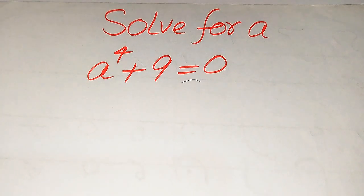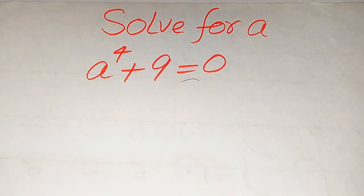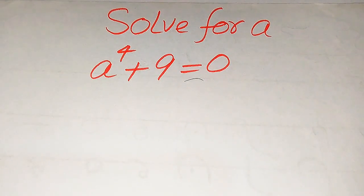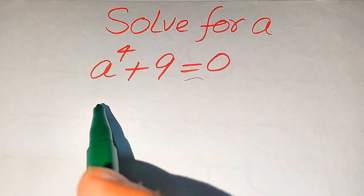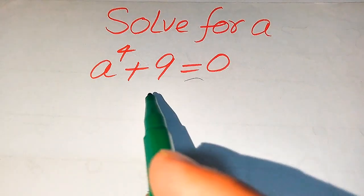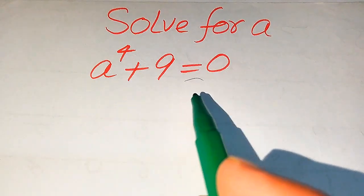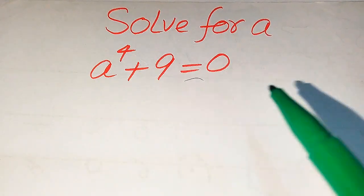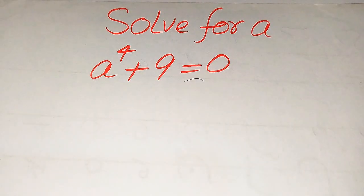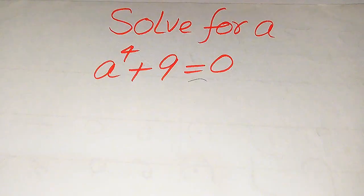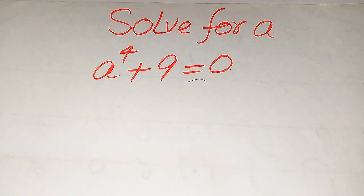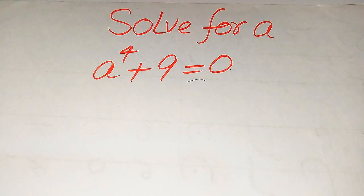Hello everyone. How to solve this problem for the values of a, if we have a to the power of 4 plus 9 equals 0, and we solve this problem for all the values of a. So here we need to find all the roots of this equation.